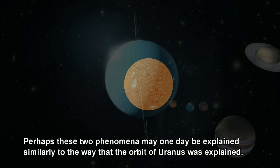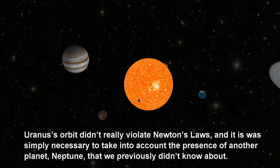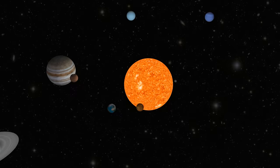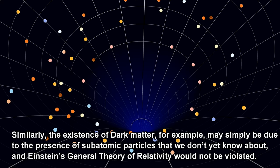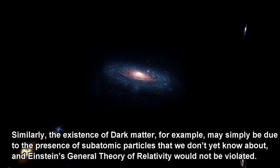Perhaps these two phenomena may one day be explained similarly to the way that the orbit of Uranus was explained — Uranus's orbit did not really violate Newton's laws, and it was simply necessary to take into account the presence of another planet, Neptune, that we previously did not know about. Similarly, the existence of dark matter, for example, may simply be due to the presence of subatomic particles that we did not yet know about, and Einstein's general theory of relativity would not be violated.